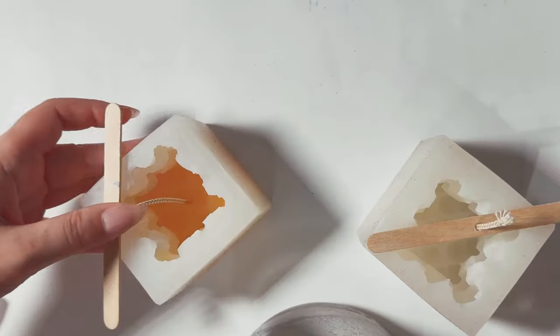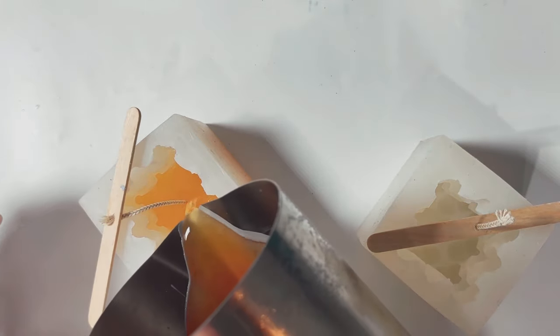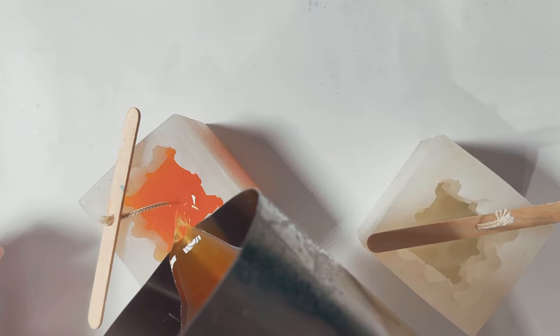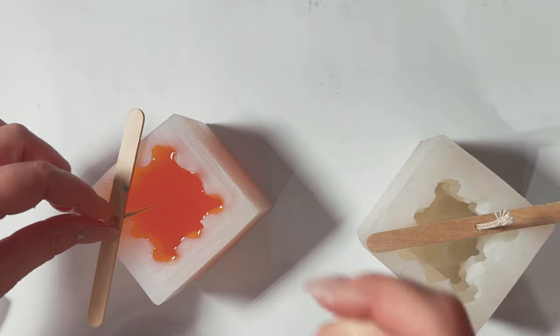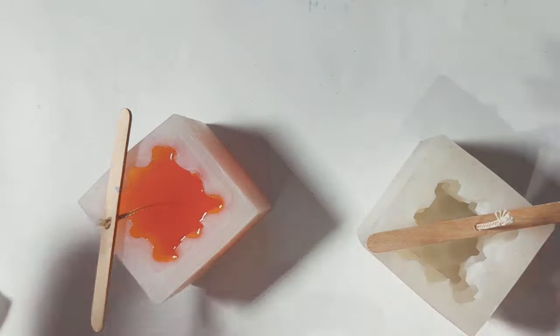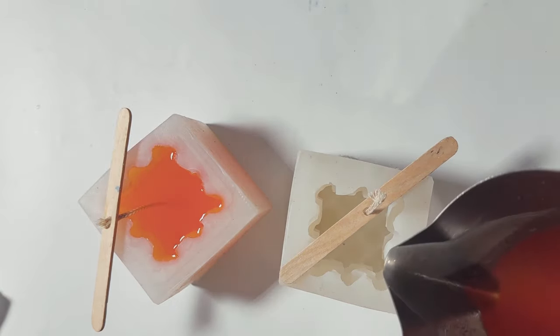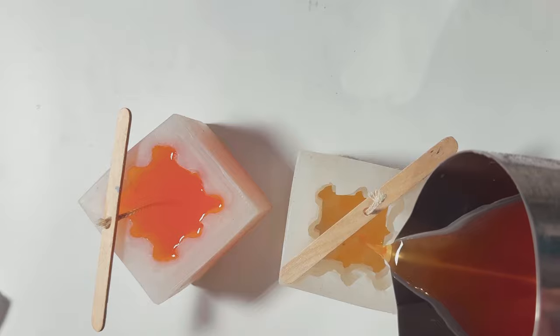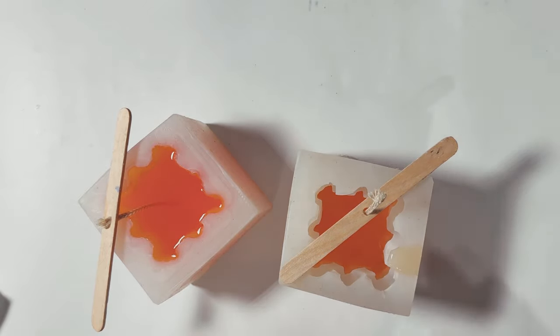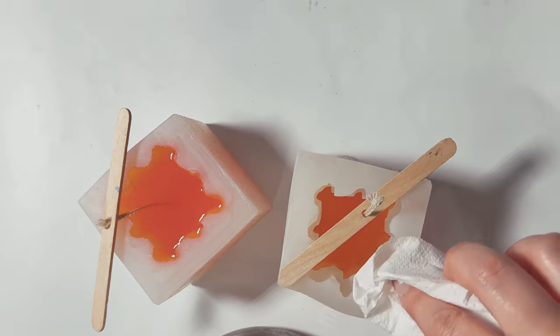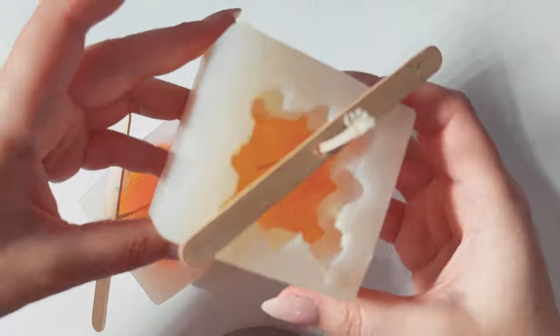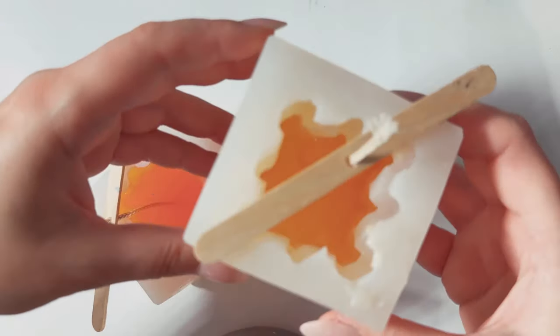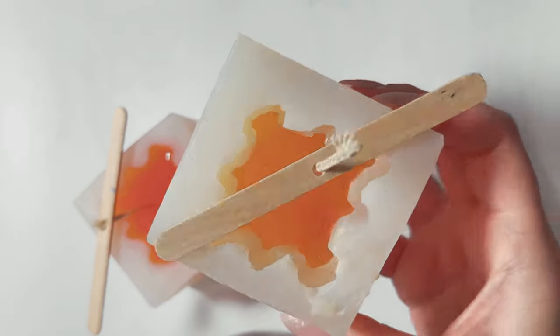I'm pouring all the way to the top, and I'm going to recenter that wick. Here you can see that I'm tapping—this is to allow air bubbles that may be trapped to go back to the surface. I'm going to make sure that I coat the inside of my mold first and then move on with pouring the rest of my wax.